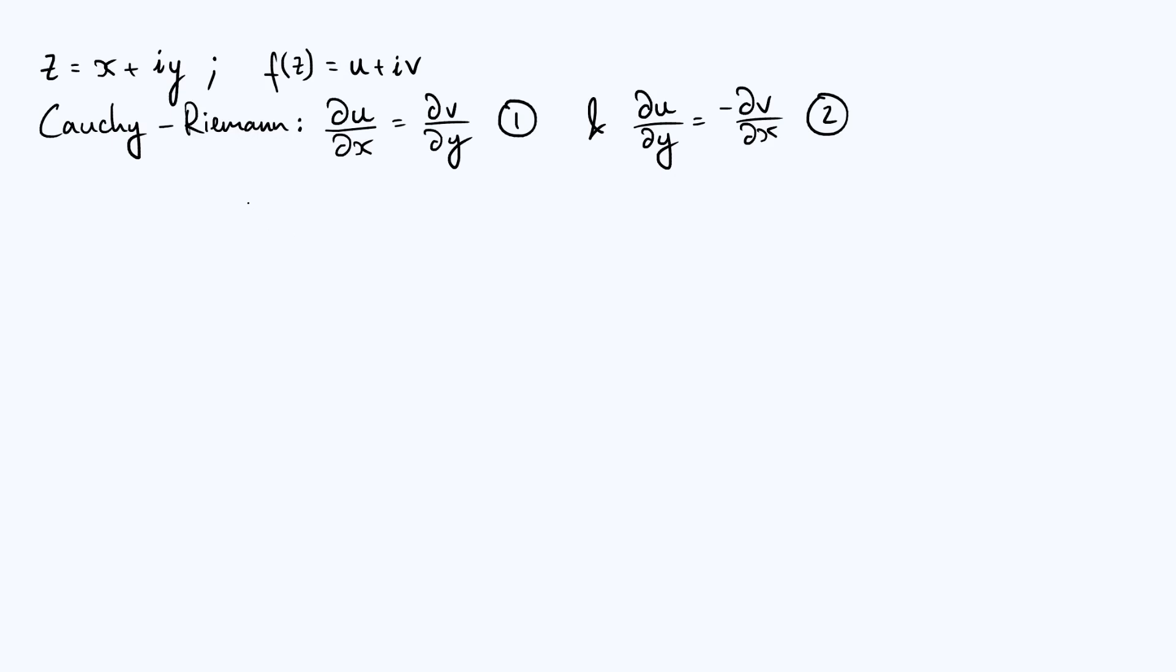We've got our generic complex variable z, which is x plus iy. x and y are real numbers, so x is the real part, y is the imaginary part of z. And we've got some function f of z, which itself has a complex value, and we can write f of z as u plus iv, where u is the real part of f, and v is the imaginary part of f. And because f depends on z, u and v can be thought of as functions of both x and y.